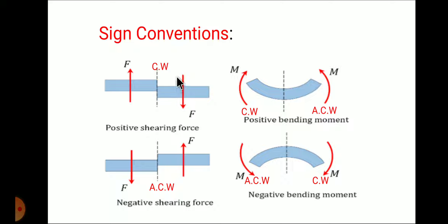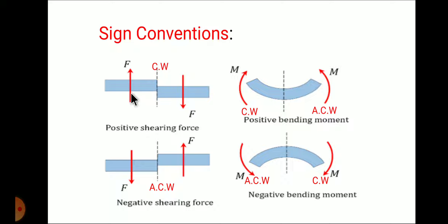When you consider a beam, there are two methods - either you can use the right section method or you can use the left section method. In the right section method, if the force is in clockwise direction, you have to take it as positive shear force. In the left section method also, if the force is in clockwise direction, then you have to take positive shear force.